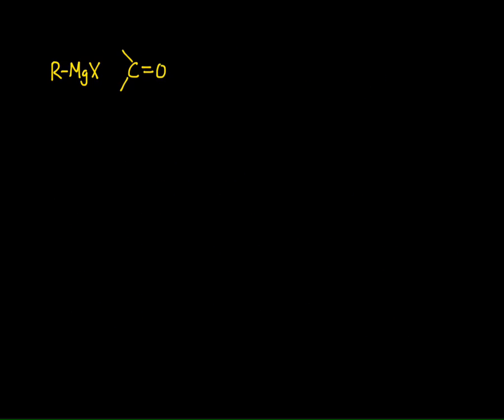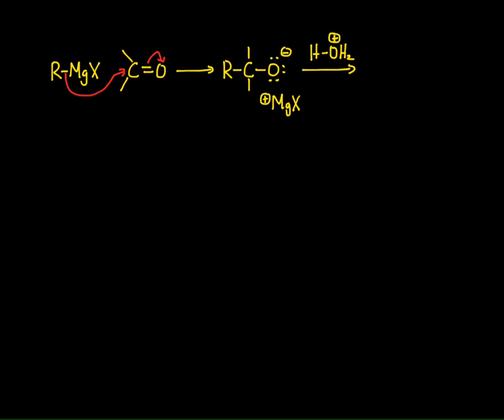The second organometallic reagent is a Grignard reagent, and the behavior of Grignards parallels the behavior of organolithiums. Again, the carbonyl carbon is partial positive, so we get attack of the organometallic reagent to that carbon, displacing a carbon-oxygen bond, and the result is an alkoxide. The only difference is the salt that's generated. We can protonate this with an aqueous acid and we generate an alcohol.